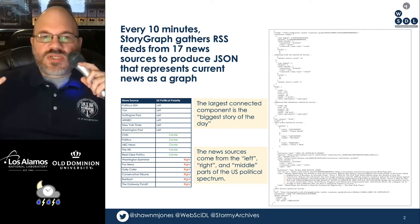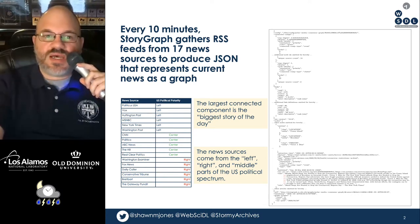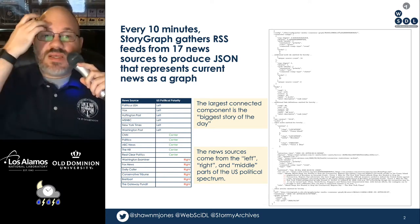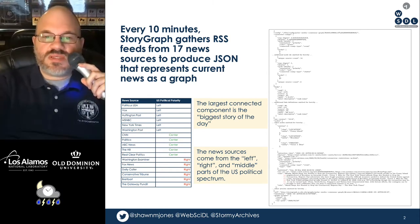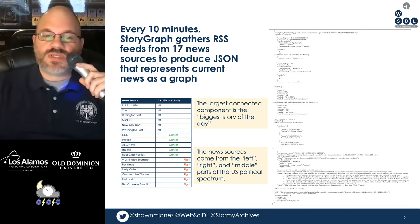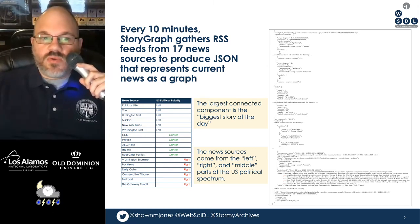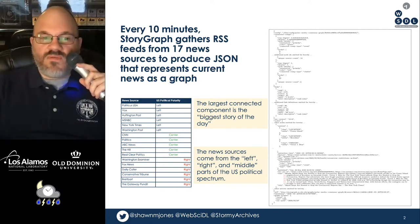The largest connected component in this graph, which is embodied in this JSON, is the biggest story of the day. The news sources in this JSON come from the left, right, and middle parts of the US political spectrum, and we have the list here on the left of where these particular news sources fall.